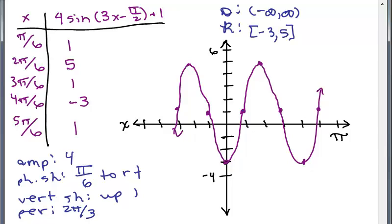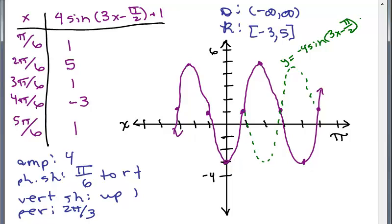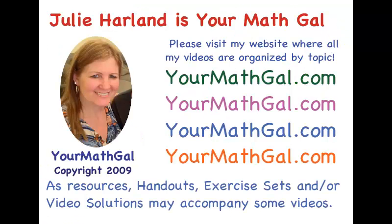Now if it were negative 4 in front, the whole thing would be flipped, because all your y-values would be multiplied by negative 4 first, so the curve would go down first from the starting point. Be careful to catch that minus sign. This is YourMathGal, Julie Harland. Please visit my website at yourmathgal.com where all of my videos are organized by topic.